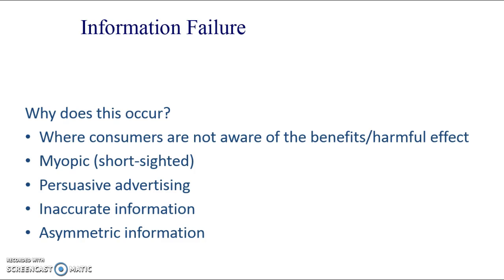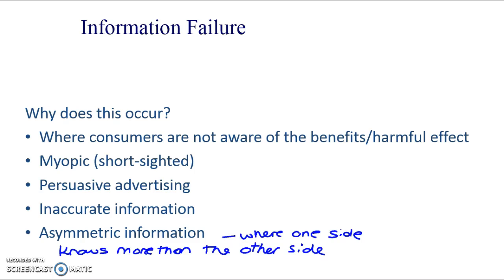And asymmetric information — asymmetric meaning more one-sided, not symmetrical. This is where one side knows more than the other side. Usually it's the producer or seller that knows more than the consumer or buyer. But sometimes it can actually be the consumer or buyer that knows more than the producer. This occurs in the market for insurance or health insurance. You know yourself if you're unhealthy, but you also know that being honest about how unhealthy you are to an insurer is going to put up your premium — so there's a bit of an incentive to lie. That would be illegal, but you can see why there are incentives for some people to be dishonest.